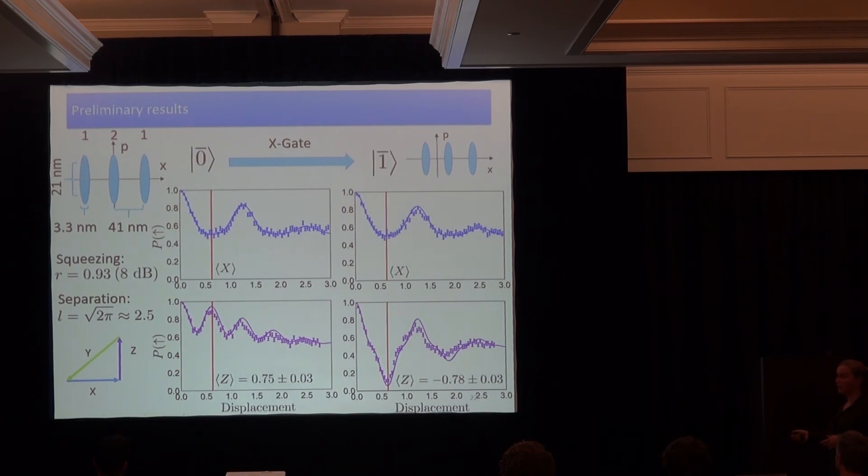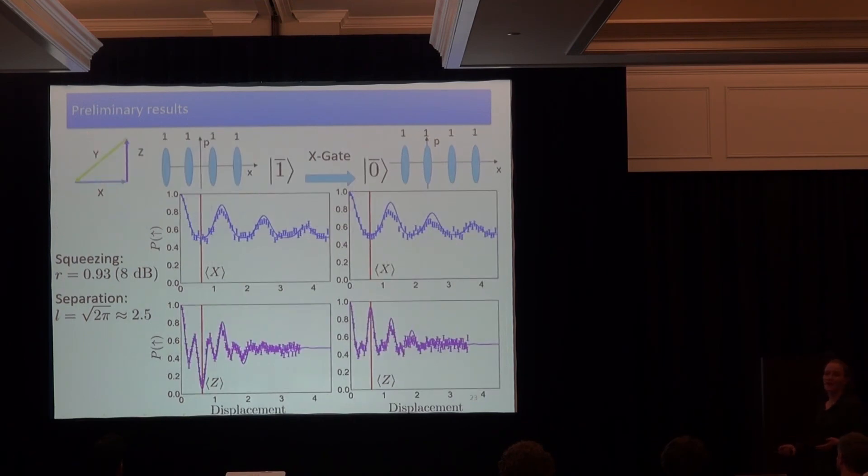I can displace this prepared state additionally in phase space, so I get this state, and do the same analysis. So the x-analysis doesn't care where the state is in phase space, so it looks totally the same. But now, really, the Z readout works because this additional shift makes this revival change its direction. And here the expectation value is roughly minus 0.78. The second revival here, which is always positive, would actually correspond to the measurement of these stabilizers.